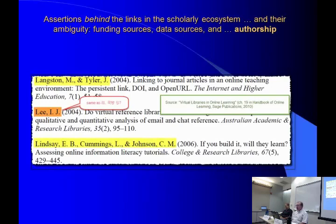When researchers use different character sets for the ways they publish — for example, someone working in the United States but from China might publish in Chinese and in English-speaking publications — they may be very difficult to connect together, because they're different character sets and maybe different forms of the name.